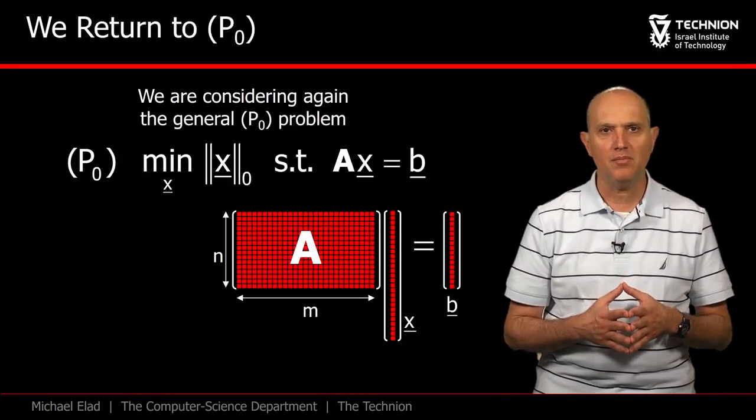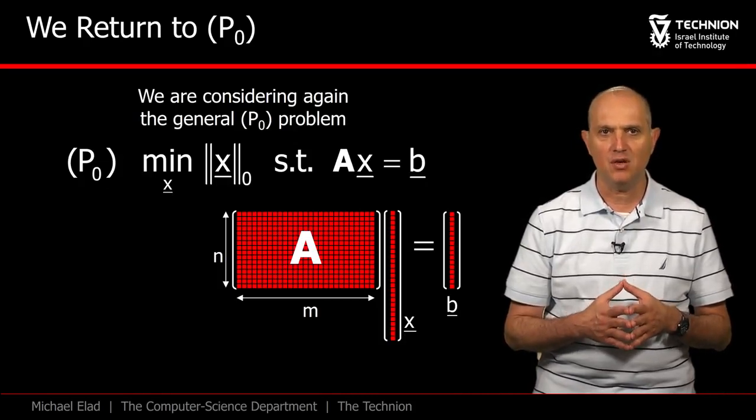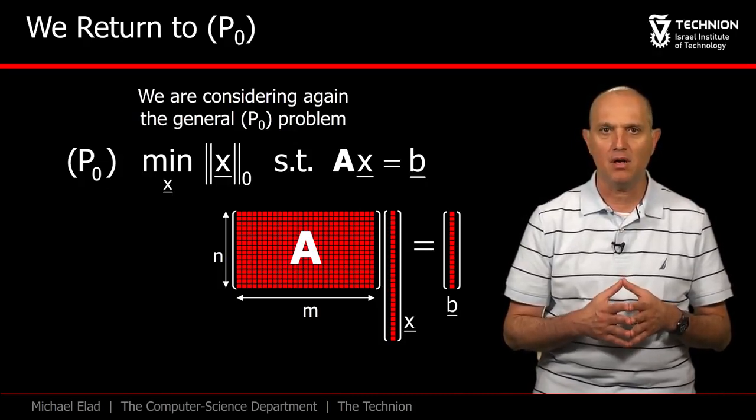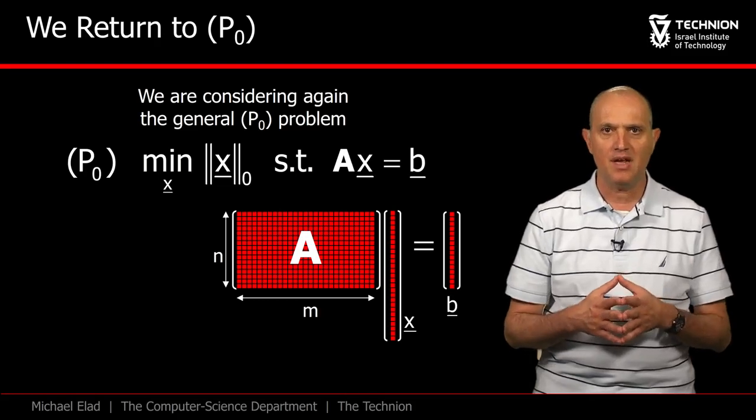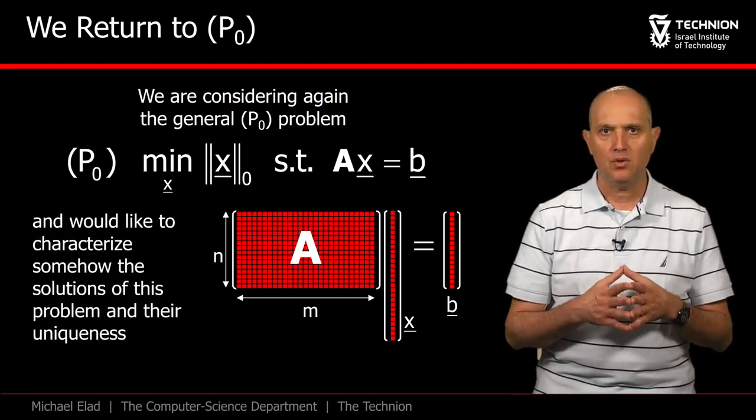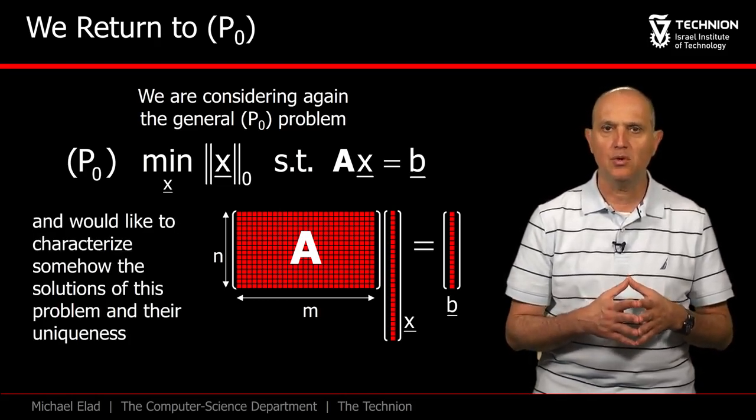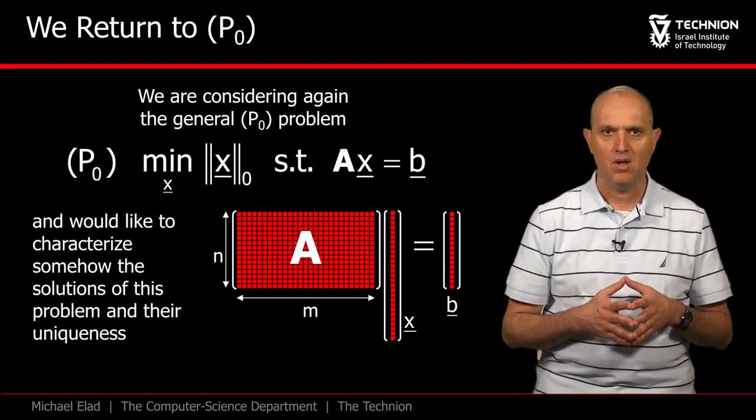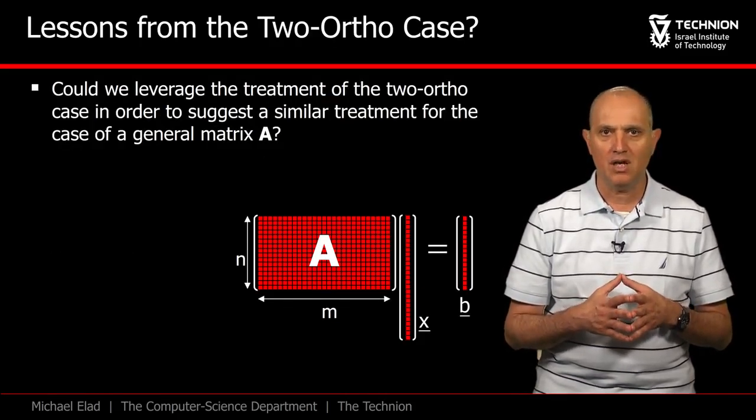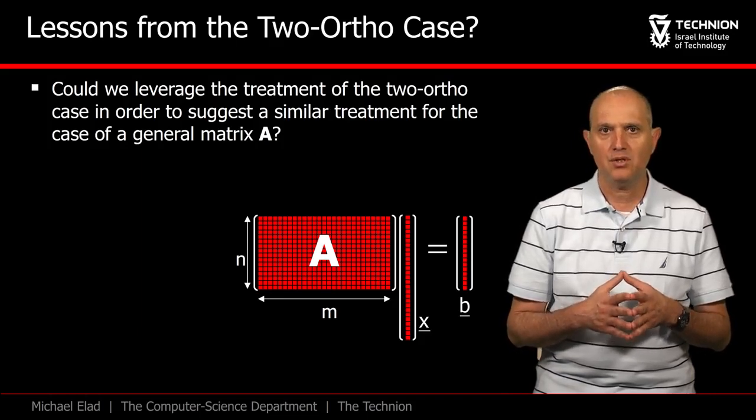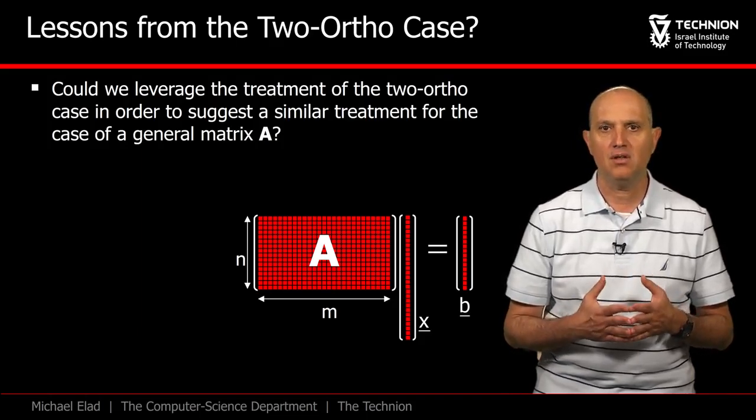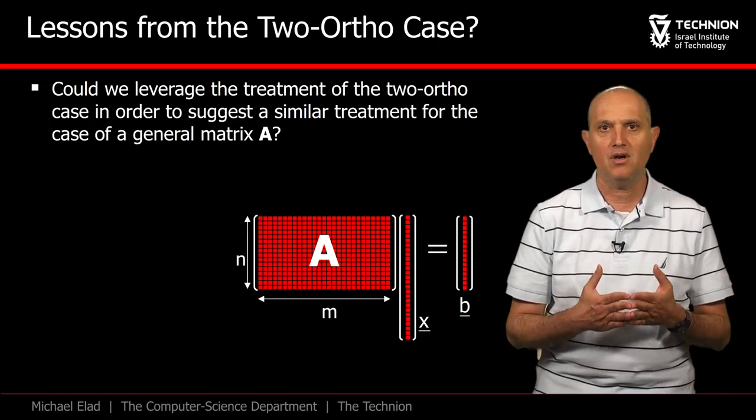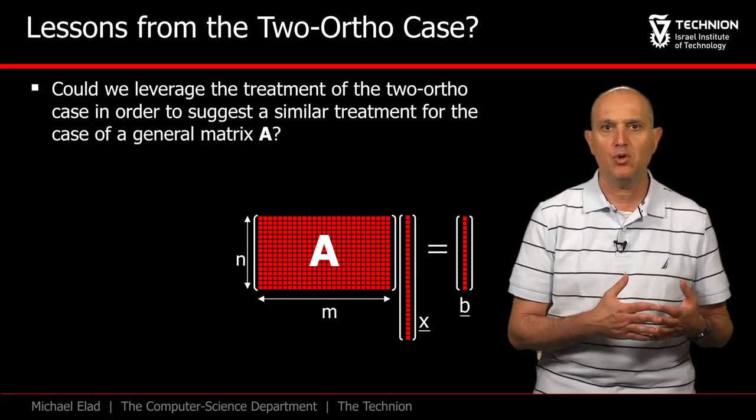We look again at the P0 problem, this time with a general matrix A of size n rows by m columns, where m is bigger than n. Our goal is to characterize conditions for a unique solution to exist. We have already seen the two-ortho results, and they are indeed inspiring. The question is whether we could imitate the derivations we have already gone through in order to handle the more general case.